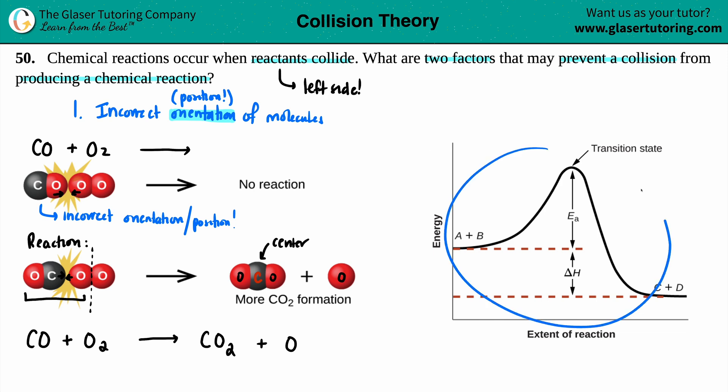If you're in your correct orientation, and everything is going to come together when they collide, boom, that makes your reaction. So that's number one. What factor may prevent a collision? If your molecules are just in the wrong positioning or in the wrong or incorrect orientation. Now, for the second one, we're going to transition over to this little drawing.